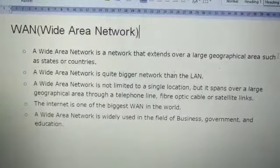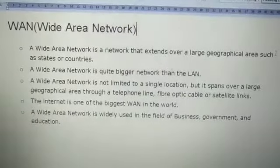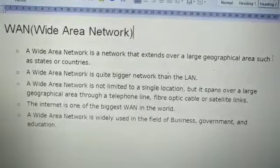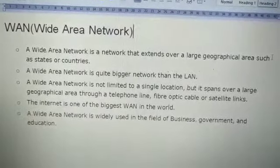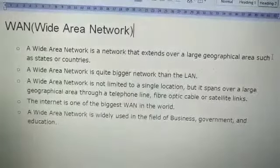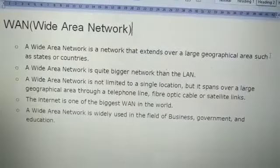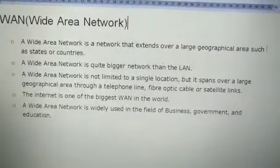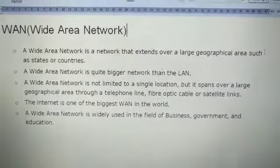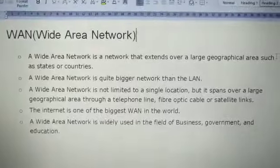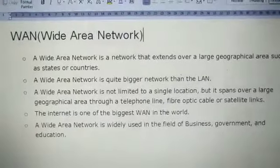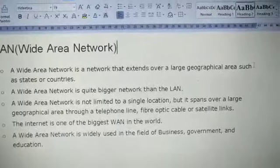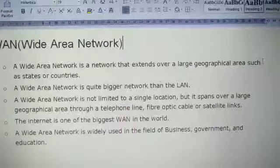WAN stands for Wide Area Network. A wide area network is a network that extends over a large geographical area such as a state, a country, or on a worldwide basis. In the case of a metropolitan area network, we have the capacity to connect an entire city, but if you want to reach more than that, then we require a wide area network.